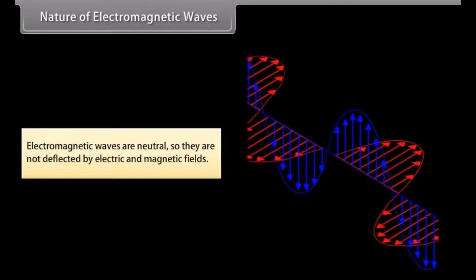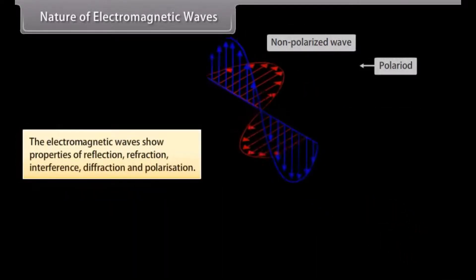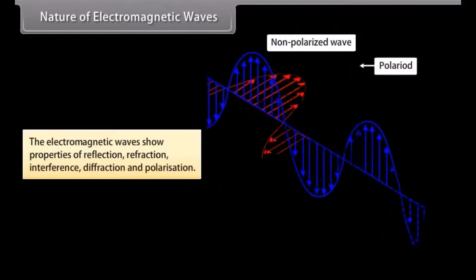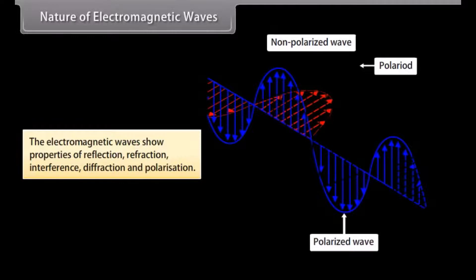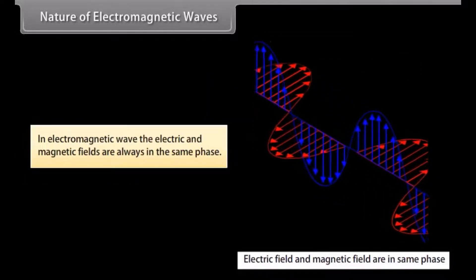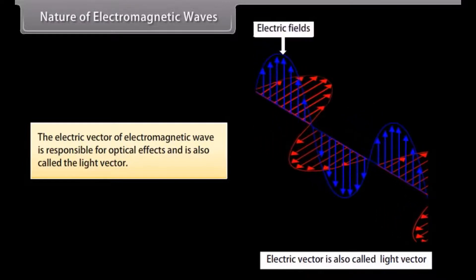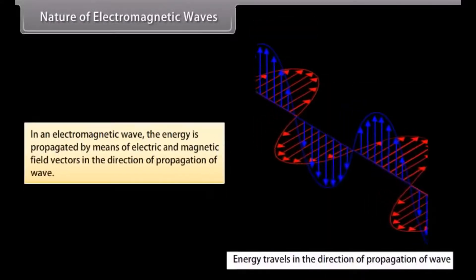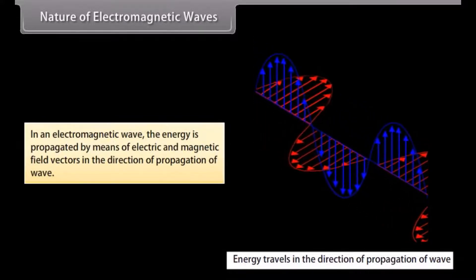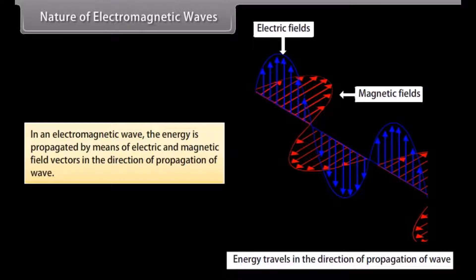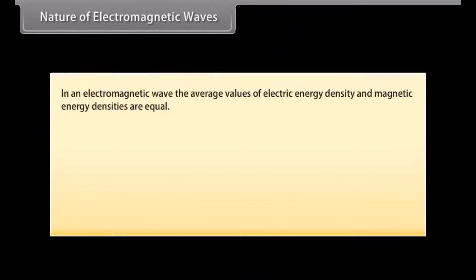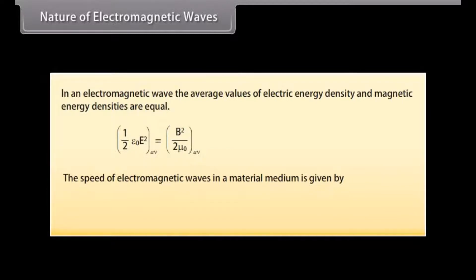Nature of electromagnetic waves: Electromagnetic waves are neutral, so they are not deflected by electric and magnetic fields. They show properties of reflection, refraction, interference, diffraction, and polarization. In an electromagnetic wave the electric and magnetic fields are always in the same phase. The electric vector is responsible for optical effects and is also called the light vector. The average values of electric and magnetic energy densities are equal. The speed of EM waves in a material medium is given by v = c/n.